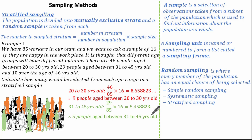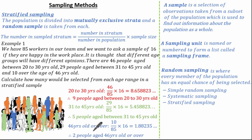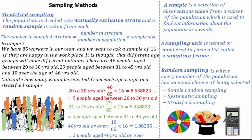For the group aged 46 and over: 10 out of 85, multiplied by 16, gives 1.8823, which rounds to 2 people. It's important to note that once we have the number of people to sample from each stratum, we must use a random sampling method to actually select those people from within their strata.